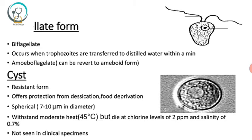The flagellate form is biflagellate. This form occurs when trophozoites are transferred to distilled water, and this occurs within a minute. It is also known as amoebo-flagellate because this flagellate form can revert to the amoeboid form — that is, it is interchangeable — hence the name amoebo-flagellate.